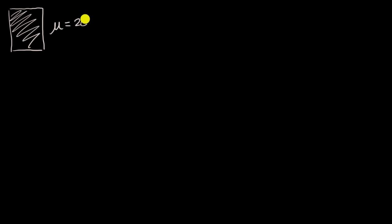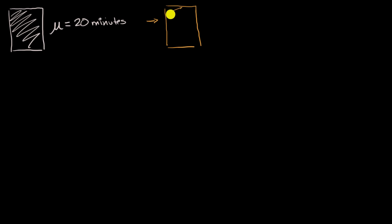Let's say that I run a website that currently has this off-white color for its background, and I know the mean amount of time that people spend on my website — let's say it is 20 minutes — and I'm interested in making a change that will make people spend more time. My idea is to make the background color yellow. But after making that change, how do I feel good about this actually having the intended consequence? Well, that's where significance tests come into play.